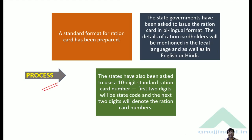A standard format for the ration card has been prepared, which will be uniform across the country. State governments have been asked to issue ration cards in a bilingual format — details will be mentioned in the local language as well as in English and Hindi. For example, in Tamil Nadu, details will also be printed in Tamil. The ration card number will be a 10-digit number — the first two digits will be the state code, and the next two digits will denote the district code.